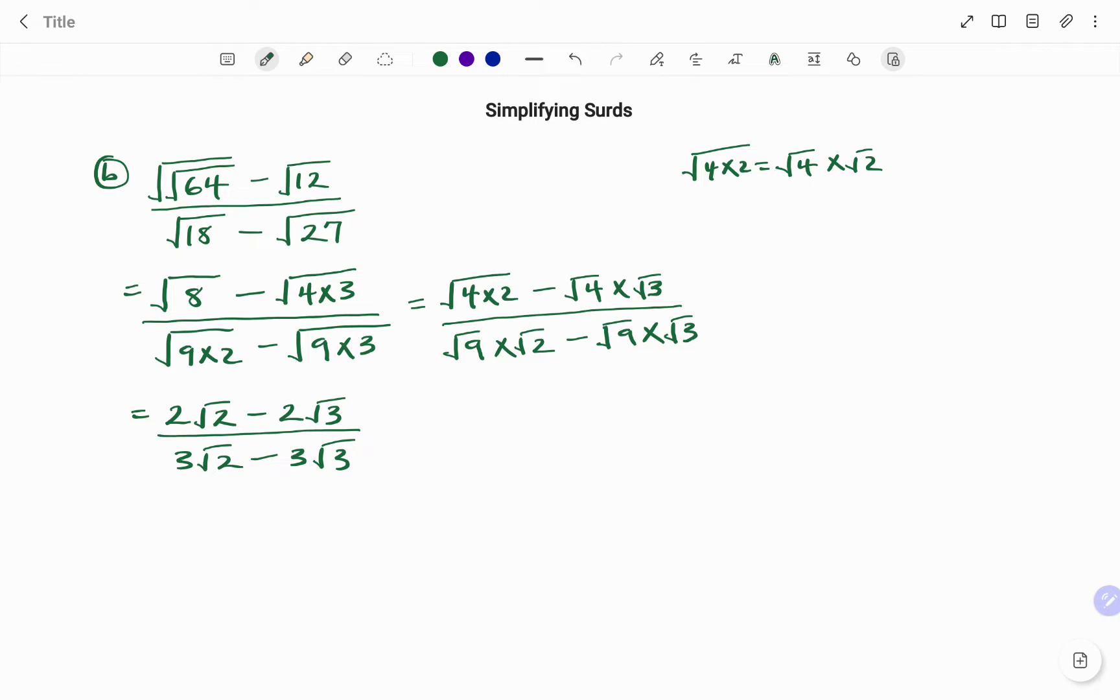what I'm going to do is to factor what is common. At the top, I have 2 common to both terms, and then at the bottom, I have 3 common to both terms. So if I factor out 2 as a common factor, I'm left with root 2 minus root 3, and for our denominator, if I factor out 3, I'm left with root 2 minus root 3.